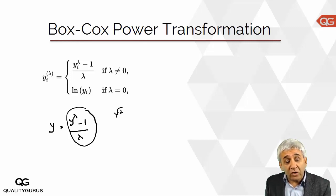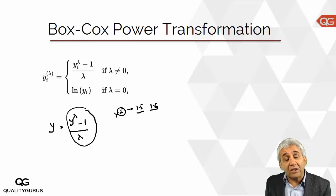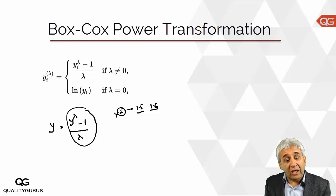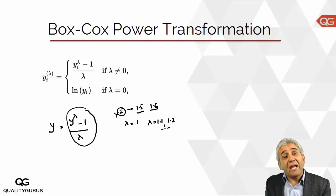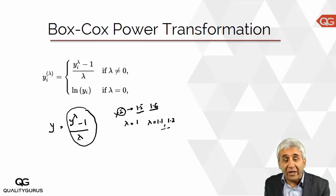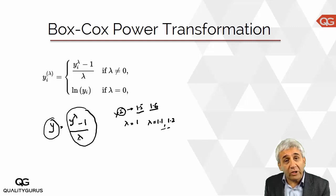Lambda could be power 2, 1.5, 1.6 — whatever works for your data, the software will decide. The software will take a number of random lambda values: lambda equals 1, 1.1, 1.2, and so on. Through these experiments, the software will tell you which lambda works better for your specific data. For each value, it calculates Y to the power lambda minus 1, divided by lambda.